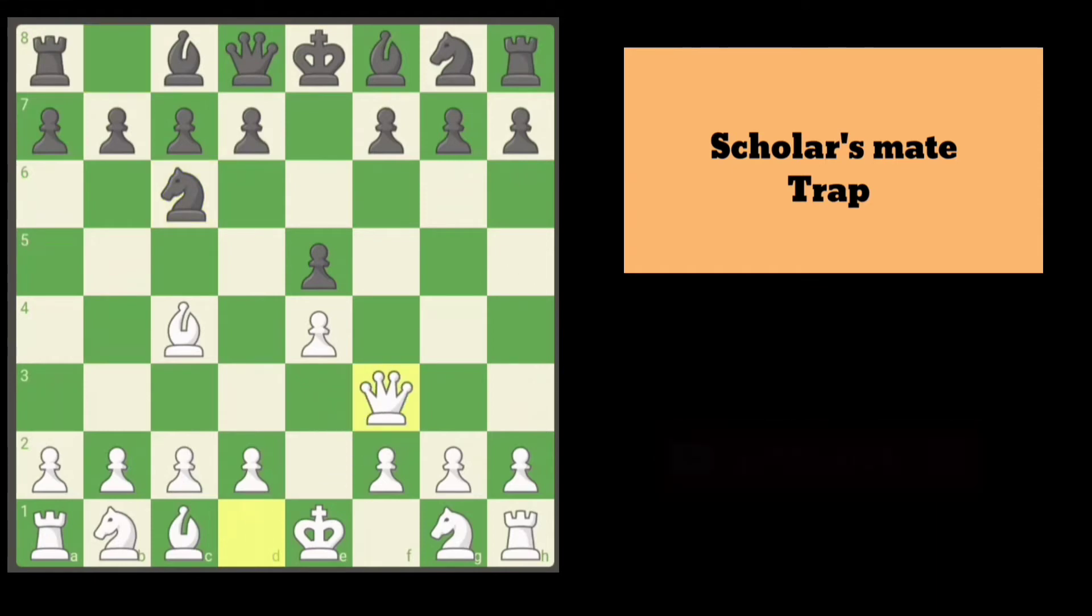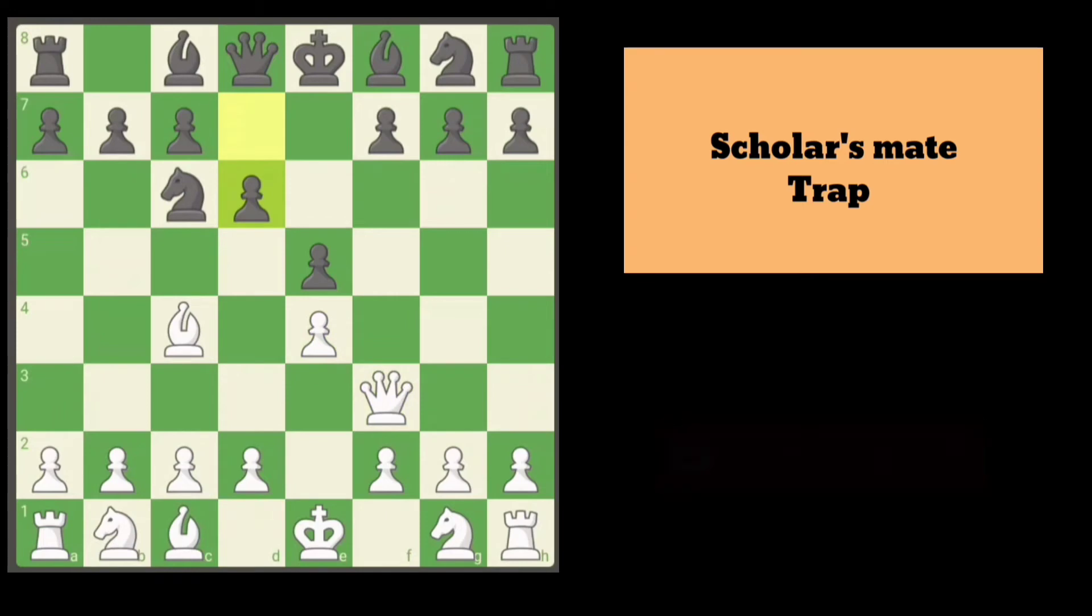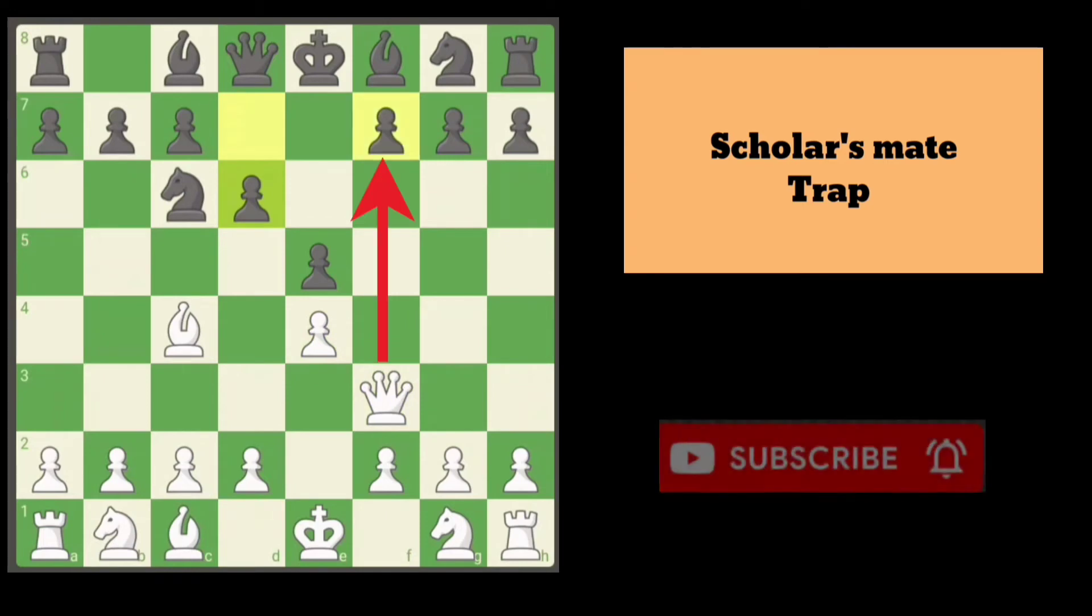Now Black thinks the queen is here to defend White's own e4 pawn and plays d6, forgetting about the f7 pawn. Next move, queen takes f7 is checkmate.